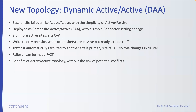There is a new topology: dynamic active-active. It's really like what we call composite active-active — two or more wide area or geo-deployed sites that are all active. With a simple connector setting change, we can change how active-active works. We designate one site as being active — the site that will be written to for all operations. The other site or sites are still technically active, but they're not going to be taking any traffic. So it's a combination of active-active and active-passive — all sites are active, but only one site is taking traffic.